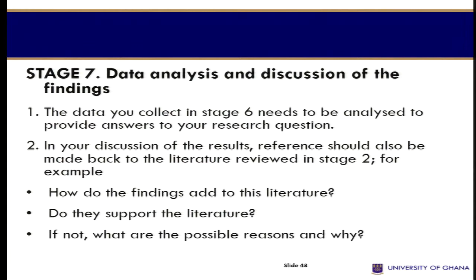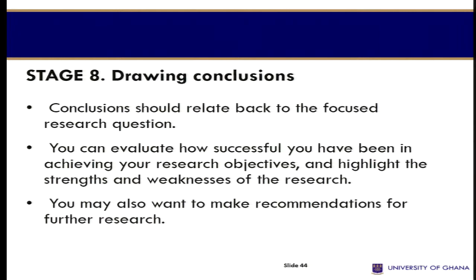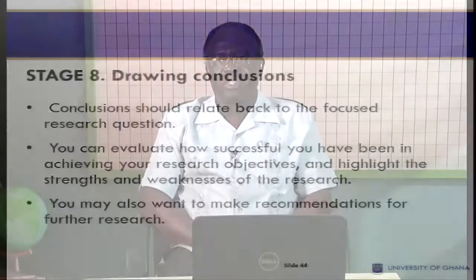Stage seven covers data analysis and discussion of the findings. The data you collect in stage six needs to be analyzed to provide answers to your research questions. In your discussion of the results, reference should be made back to the literature reviewed in stage two — for example, how do the findings add to this literature? Do they support the literature? If not, what are the possible reasons and why? Conclusions should relate back to the focused research question. You can evaluate how successful you have been in achieving your research objectives and highlight the strengths and weaknesses of the research. You may also want to make recommendations for further research.